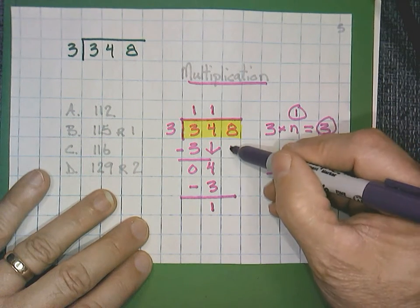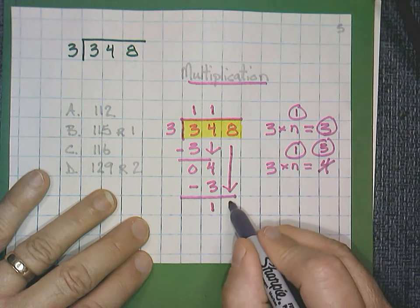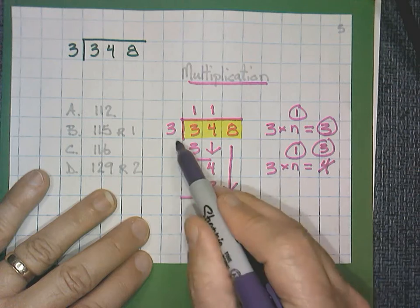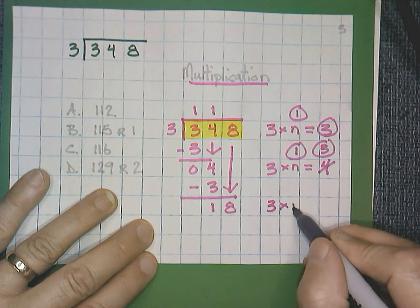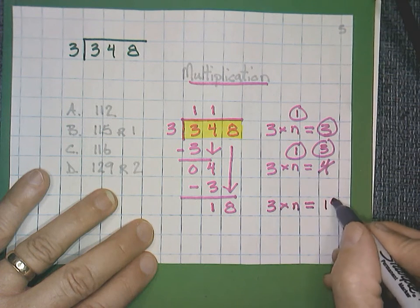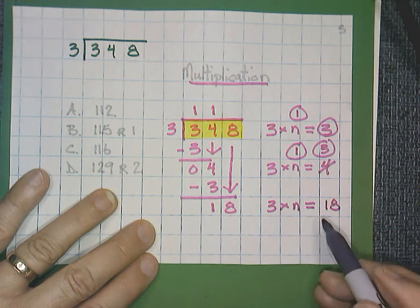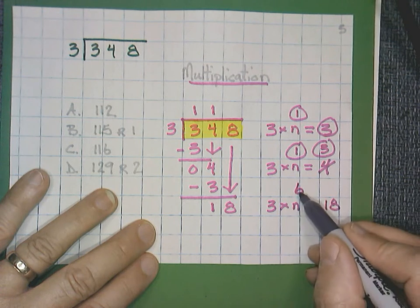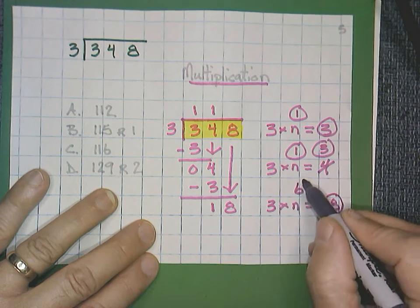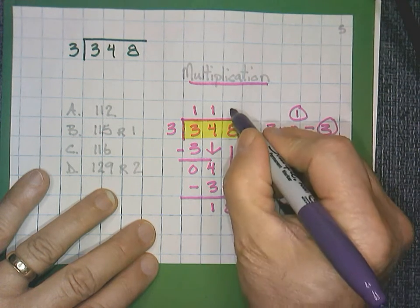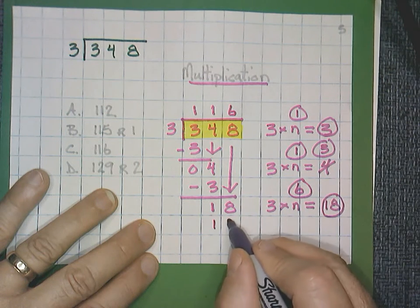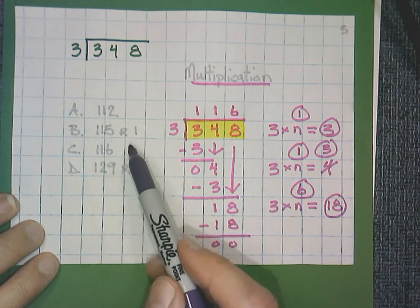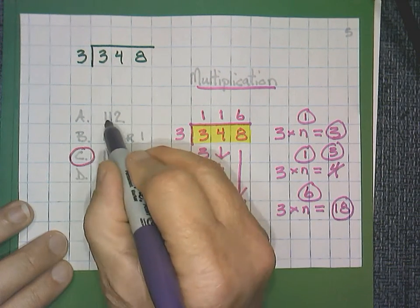Still have this 8. I'm going to bring that 8 down and rewrite it. Now I have 18 divided by 3. I'm going to write my equation. 3 times n is equal to this time 18. If I use my multiplication chart or my knowledge of multiplication, I know that to solve for n, that's going to be 6. 3 times 6 does equal 18. So I can circle that one. I'm going to circle both and use both. 6 goes on the top. And the 18 on the bottom. I have no remainder. So my quotient is 116, which would be answer C.